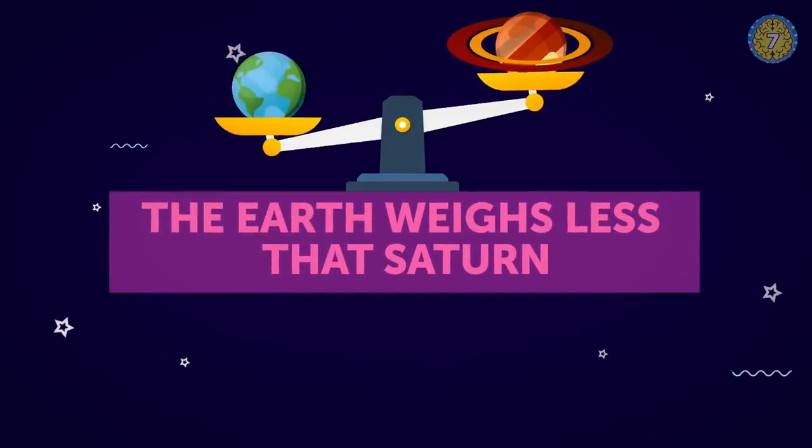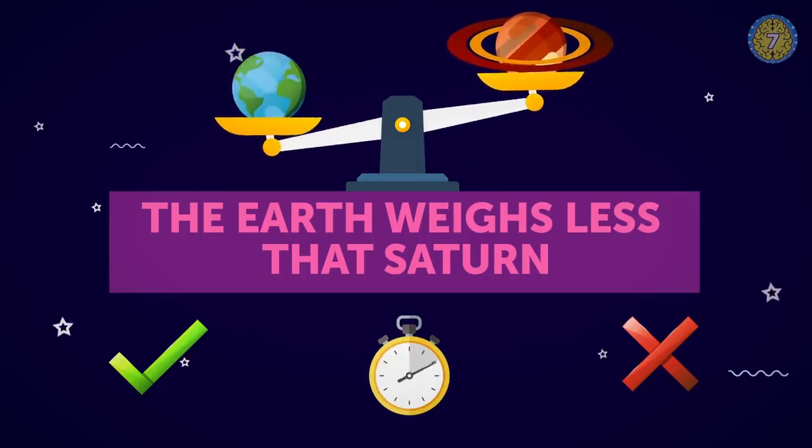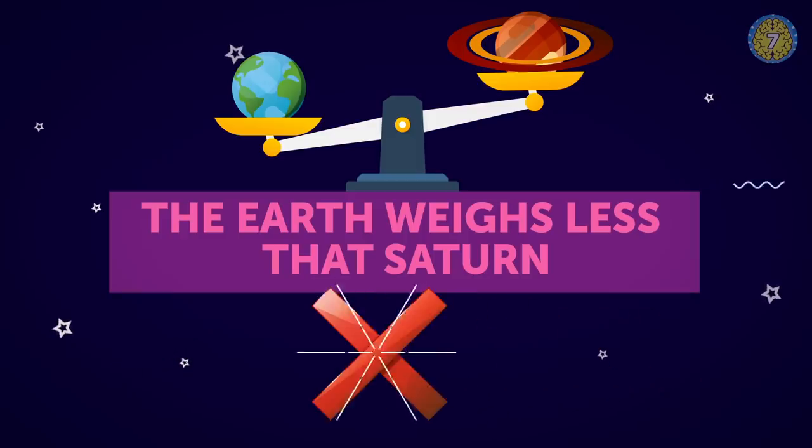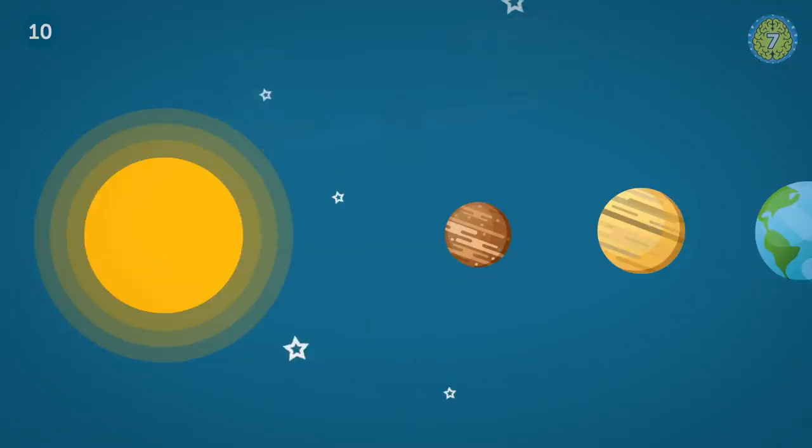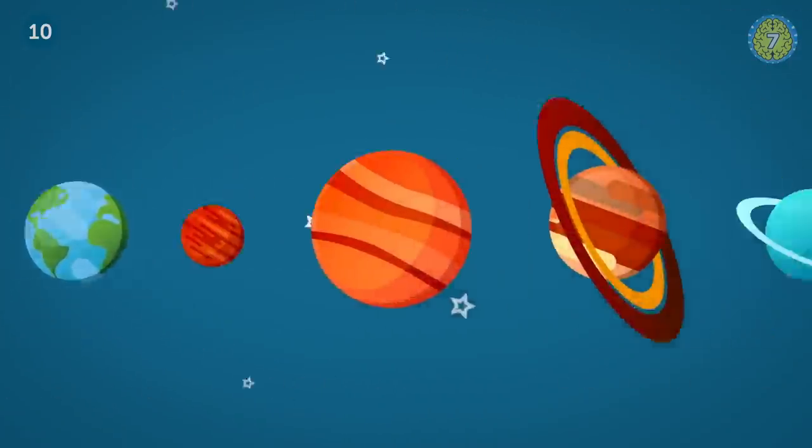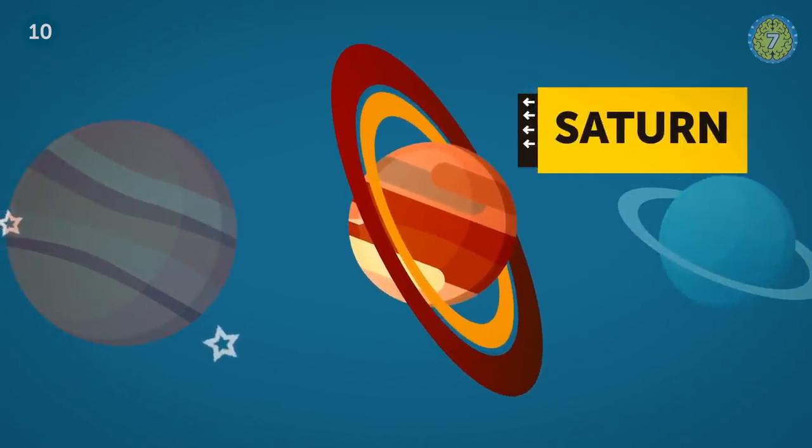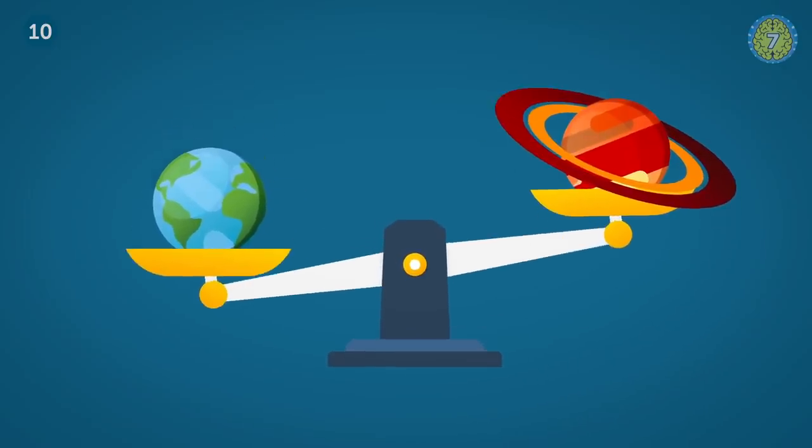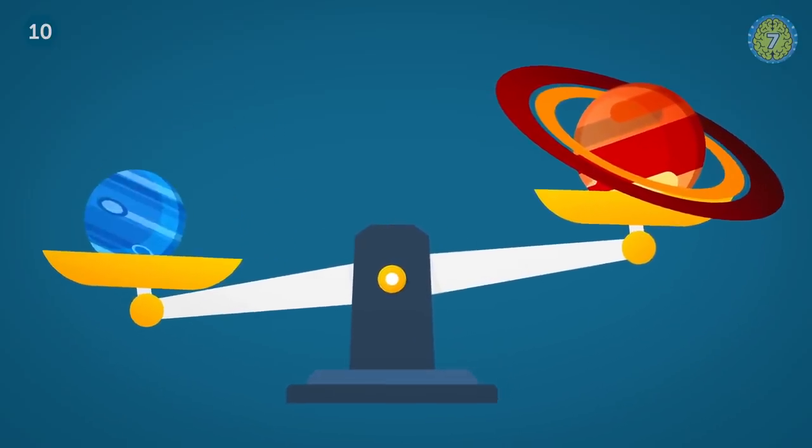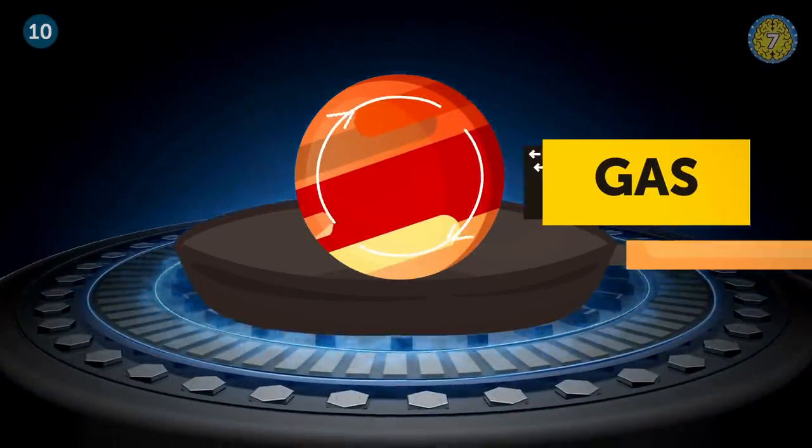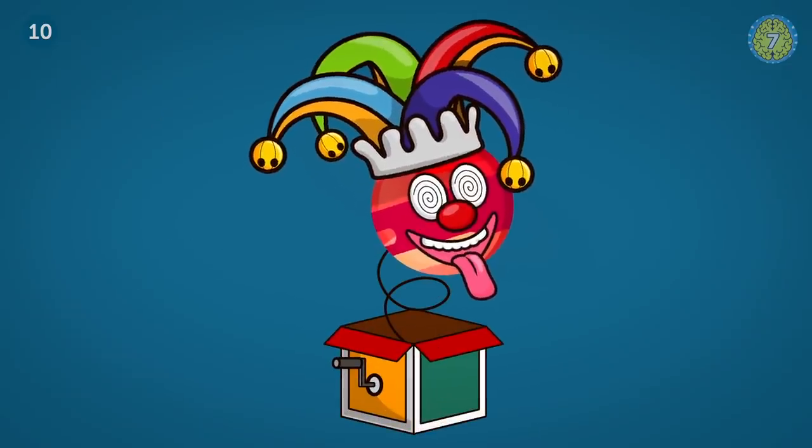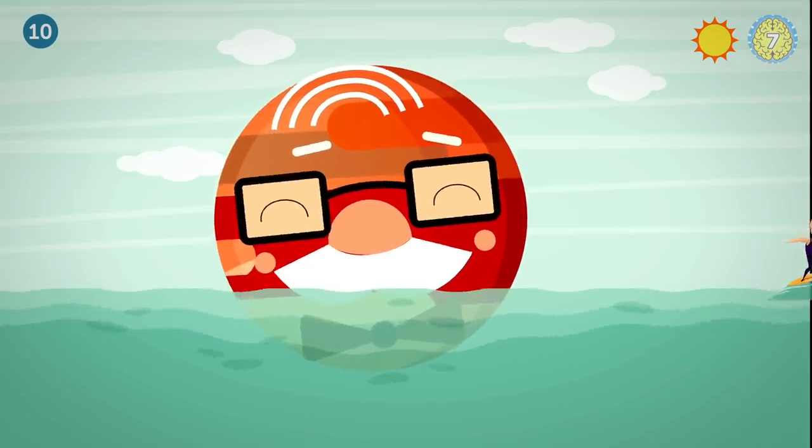The earth weighs less than Saturn. Is that true or false? Saturn is the second largest planet in our solar system. Yeah, but we're talking about weight, pounds, kilograms. It's actually the lightest planet in the system. Saturn's mostly made out of gas. So get ready to hear the craziest thing ever. You ready? Saturn could float on water. I mean, if you found a large enough swimming pool.